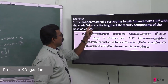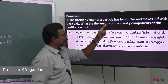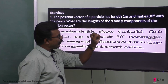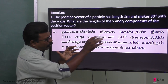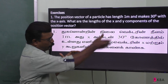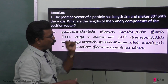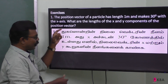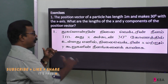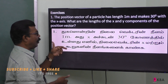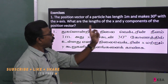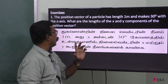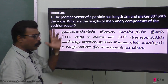The position vector of your particle has length 1 meter. One particle has a position vector of 1 meter and makes 30 degrees with the x-axis. What are the lengths of the x and y components of the position vector?